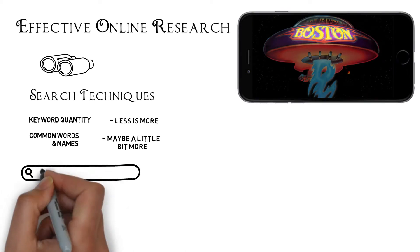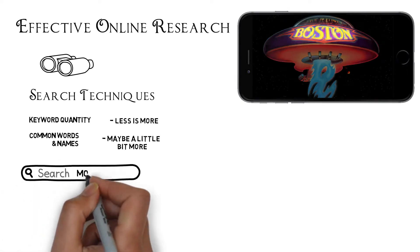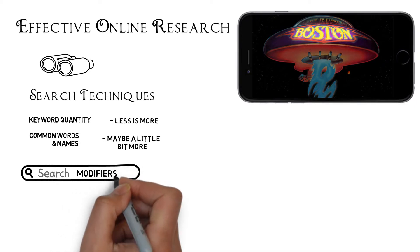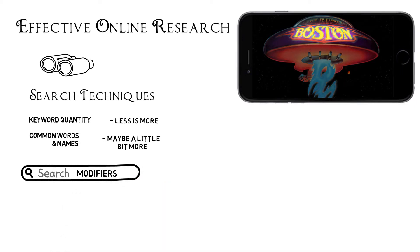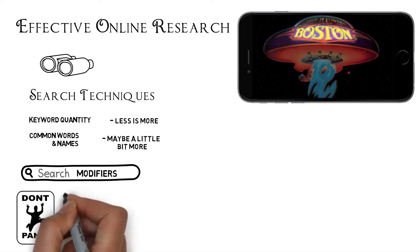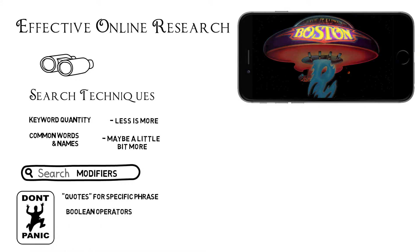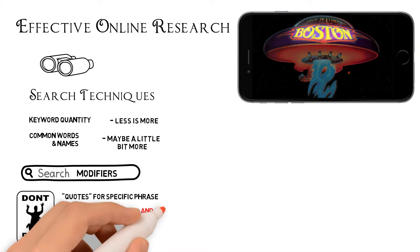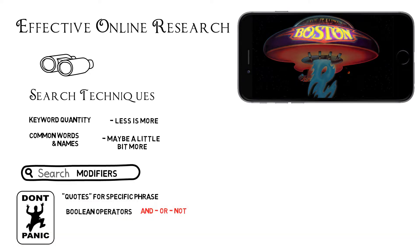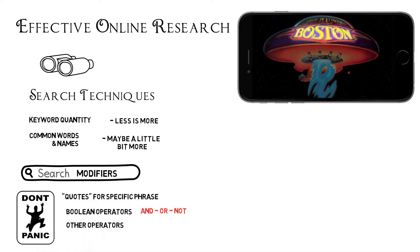Search Modifiers: If you still are having trouble finding what you need, try using a few search modifiers. Placing quotes around a group of words will force the search engine to find pages where those words appear together. Boolean operators such as AND, OR, and NOT refine key terms. You can use other operators, but they depend on the search engine. You can also use advanced search tools such as Google's advanced search.